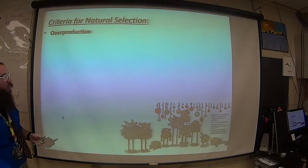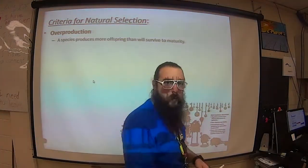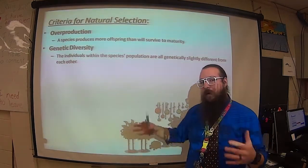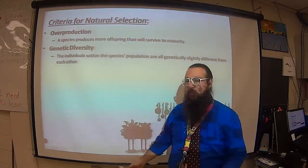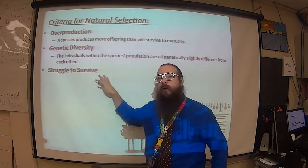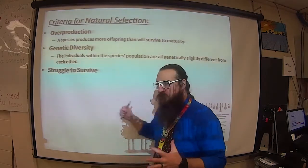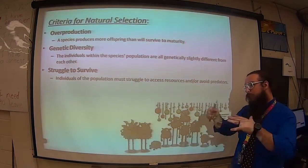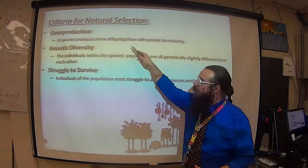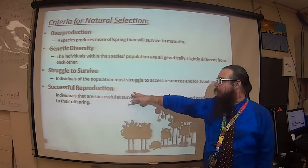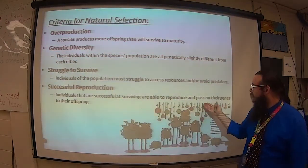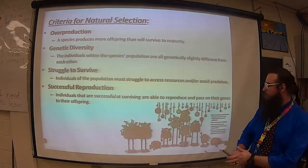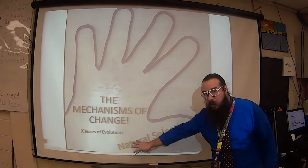Here are some criteria for natural selection to occur. First, there must be overproduction — more organisms in the environment than can actually survive. We also need heritable differences: differences that can be inherited, so individuals must be genetically different from each other. There needs to be a selective pressure, something causing a struggle to survive — not enough resources, or predators putting pressure on the population. Because not everyone is the same and there is pressure, those more successful at reproducing will pass on their genes to offspring, and over generations we'll see a big change in the population.